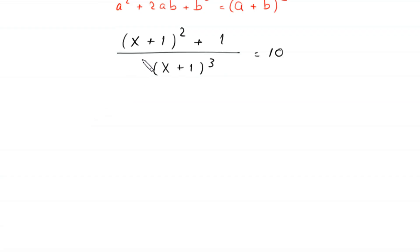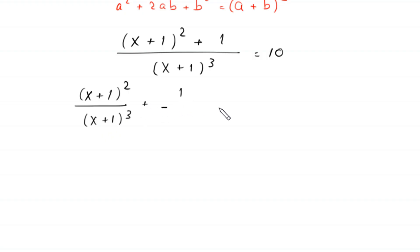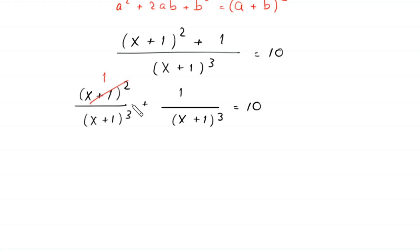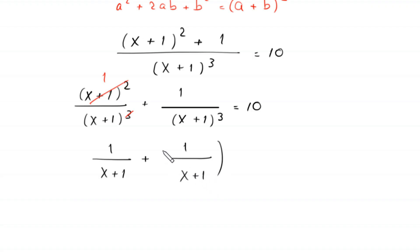This expression on the left-hand side can be written as (x+1) whole squared divided by (x+1) whole cubed, plus 1 divided by (x+1) whole cubed, equal to 10. The (x+1) squared cancels with the cubed, leaving 1 over (x+1). So we get 1 over (x+1) plus 1 over (x+1) whole cubed equal to 10.